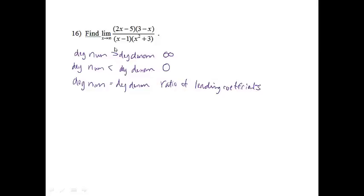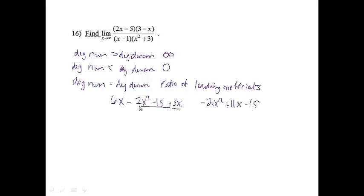Looking at this one, I'm going to go ahead and distribute in the numerator and distribute in the denominator. So I will get 6x minus 2x squared minus 15 plus 5x, and in standard form that gives me negative 2x squared plus 11x minus 15. In the denominator, I'll get x cubed plus 3x minus x squared minus 3, which in standard form is x cubed minus x squared plus 3x minus 3.